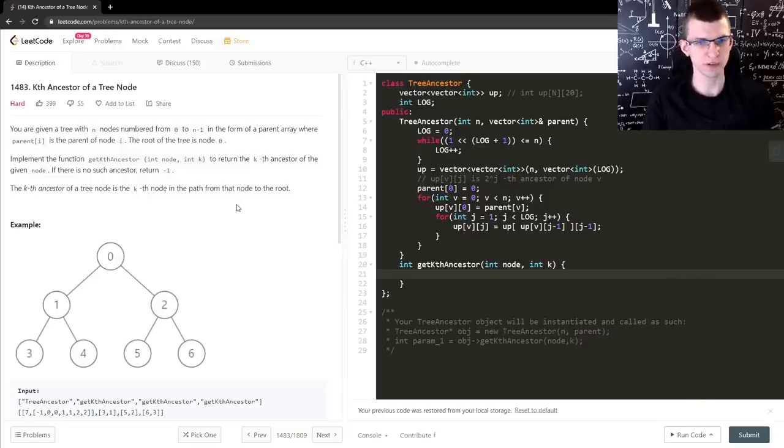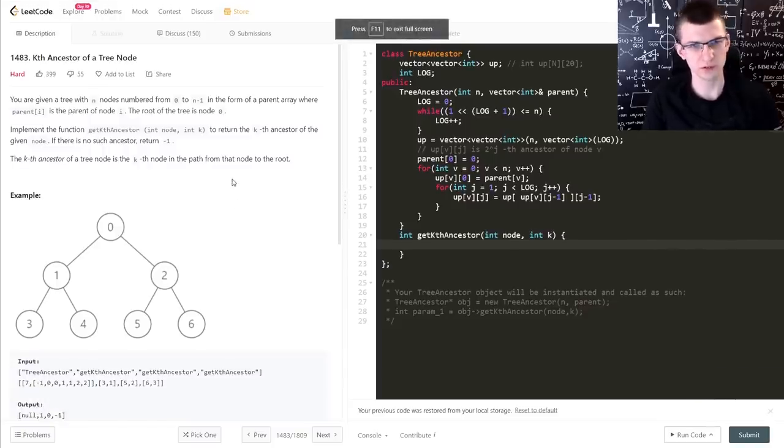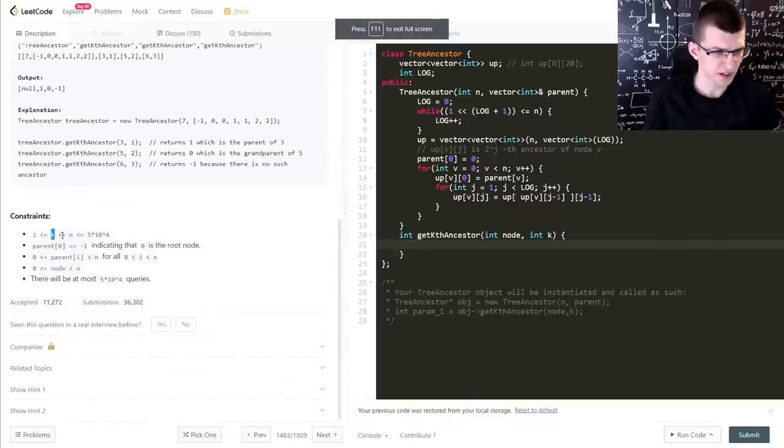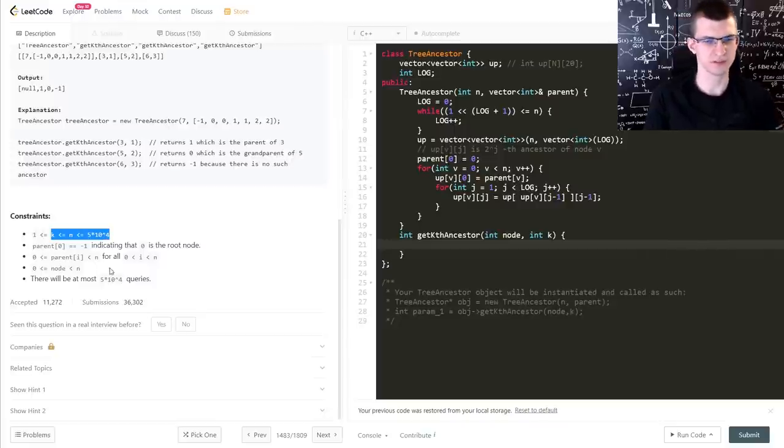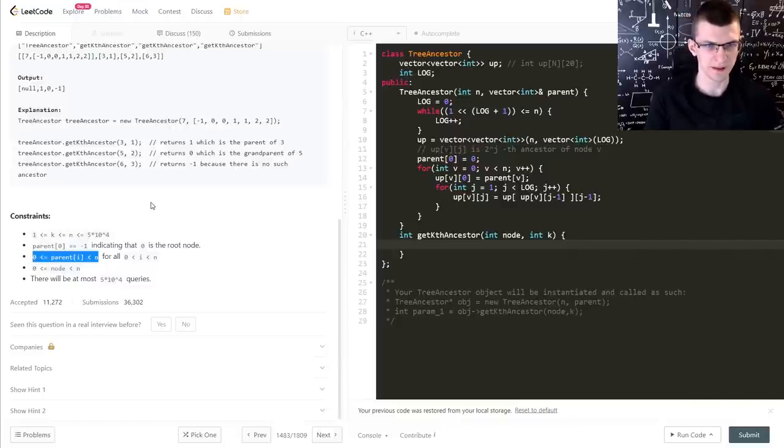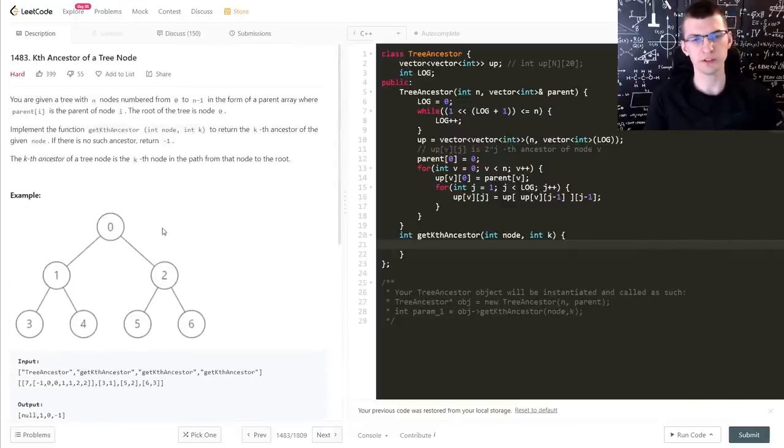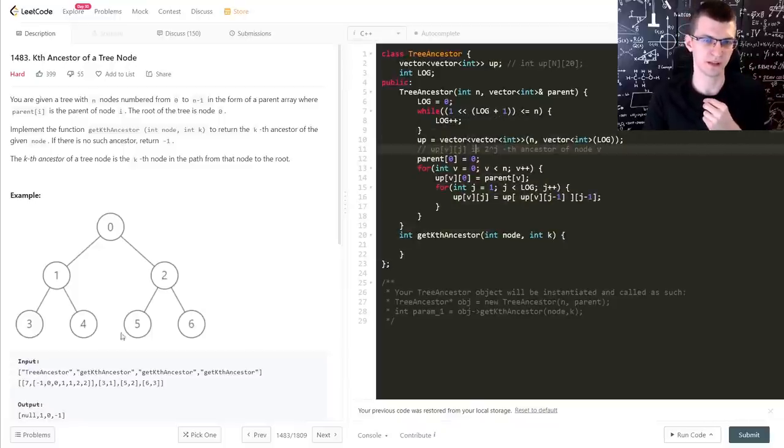Here is the lead code problem. Link is in the description. Let's go full screen. The constraints are that the tree size is around 50,000. Quadratic solution isn't possible. Also 50,000 queries. And there is this condition about parents, which is quite convenient. One more thing we didn't discuss yet, but we will need to see here, is what happens if some ancestor doesn't exist. Like for node 4, let's say, you ask about 16th ancestor up.